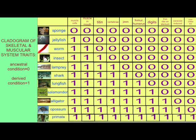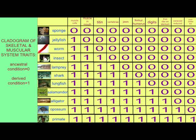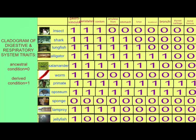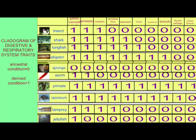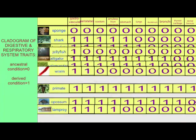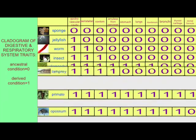If we were to look at the relationships of traits drawn from a respiratory and digestive cladogram, it would be comparable to that which was derived from the skeletal and muscular cladogram.